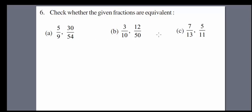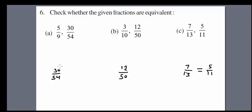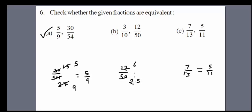Question six: check whether the given fractions are equivalent. For part a: 30 over 54 — since 5 by 9 is not reducible, we check 15 over 27. Dividing by 2: 15 over 30 and 7 to 14 is 15 over 27, which reduces to 5 over 9. So it is correct — they are equivalent. For 12 over 50: dividing by 2 gives 6 over 25, which is not 3 over 10, so it is not equivalent — false. Part C is also not equal.